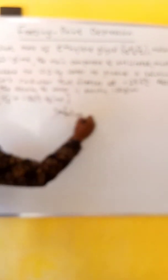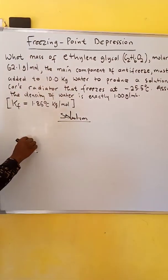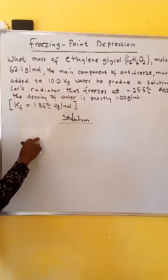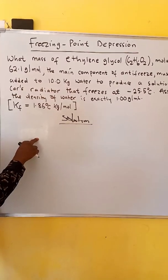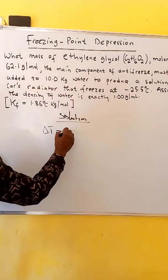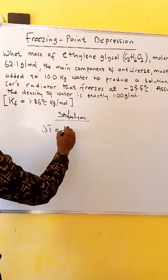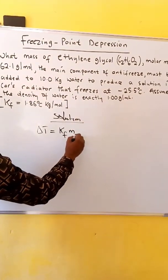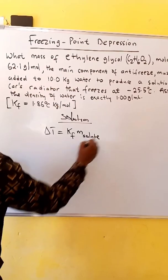Solution. The formula for freezing point depression is analogous to that for boiling point elevation. Delta T is equal to Kf times M solute.